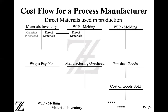Moving on to direct material used in production. Very similar to what we learned in job order costing — when we use direct material, we debit work in process and credit our materials inventory account. The only difference here is that we are debiting work in process melting, because as you can see on the T accounts, there are two work in process accounts: work in process melting and work in process molding. These are two different processes or departments. Because we are using material in the first department, which is melting, we debit work in process melting and credit material inventory.